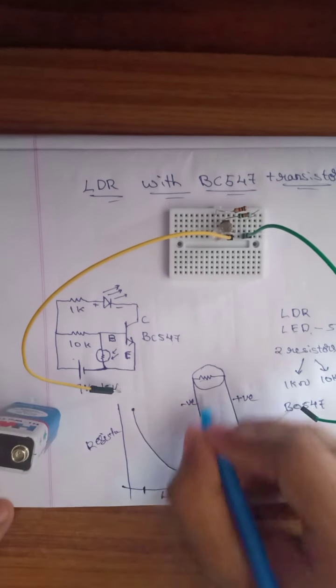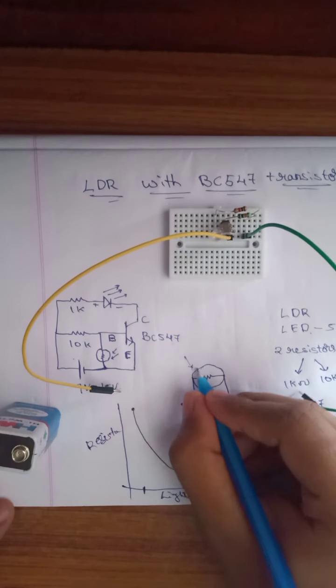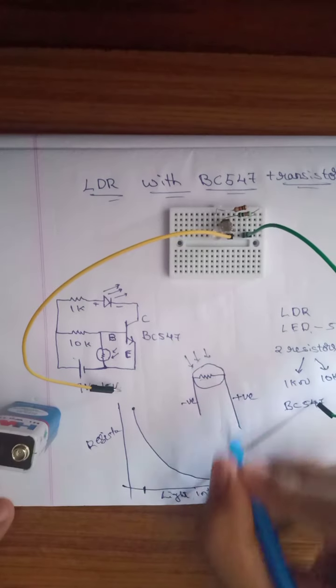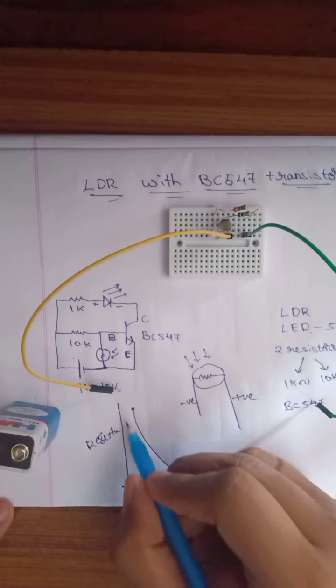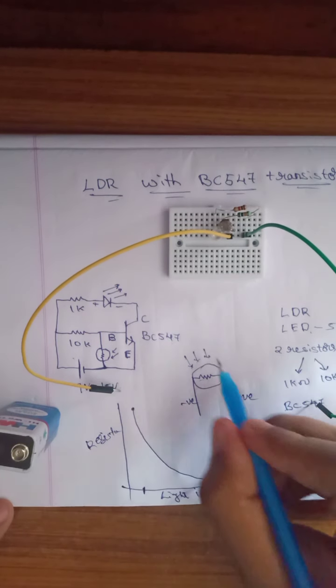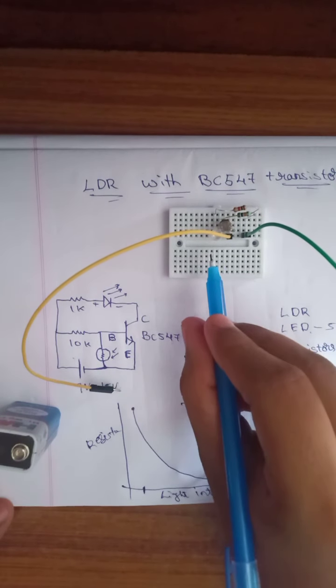Light intensity on this LDR is low, resistance is high. The flow of current is less, so then LED does not glow.